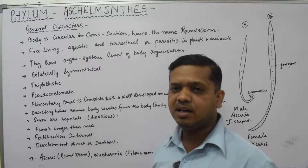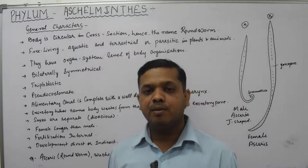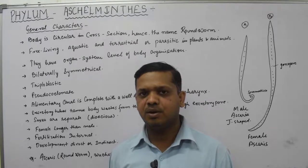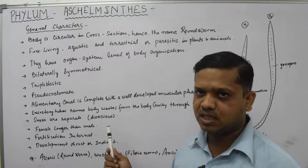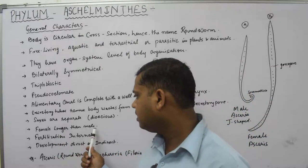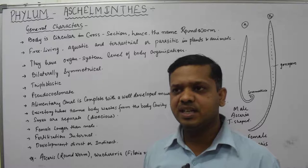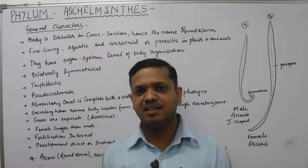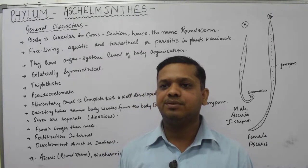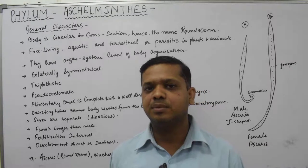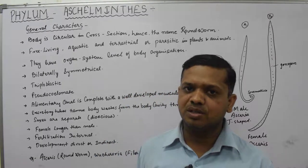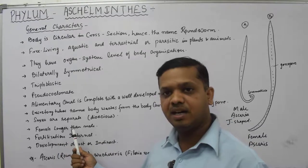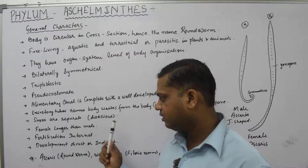Sexes are separate — they are dioecious. Dioecious means male and female bodies are separate. Females are longer than the males. The female body is approximately 20 to 40 centimeters in length, while the male body is 15 to 20 centimeters in length. We will see the shape in the diagram later on.